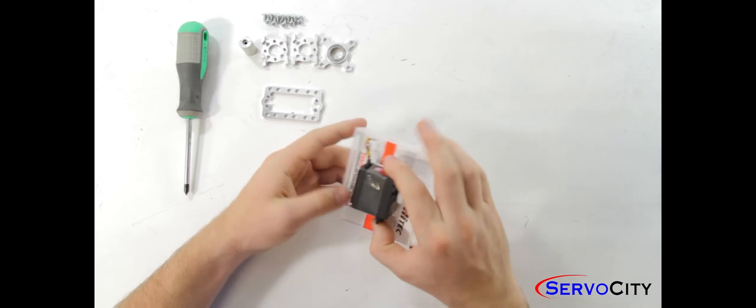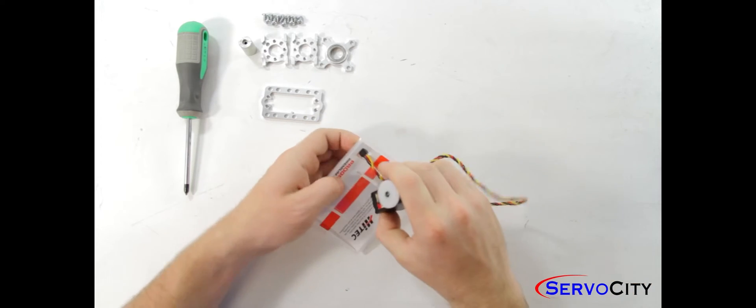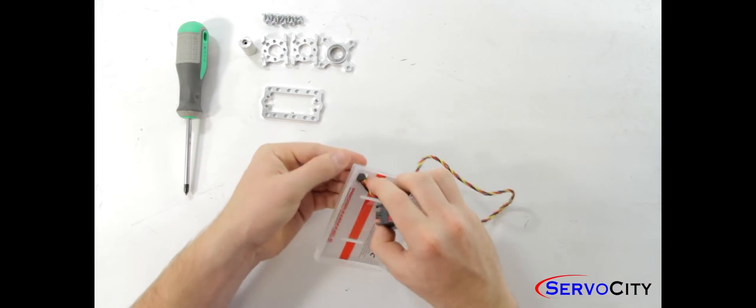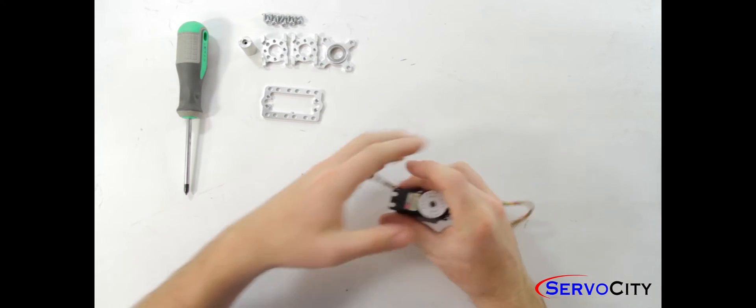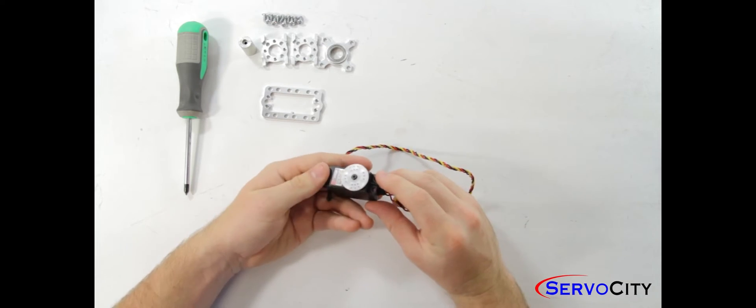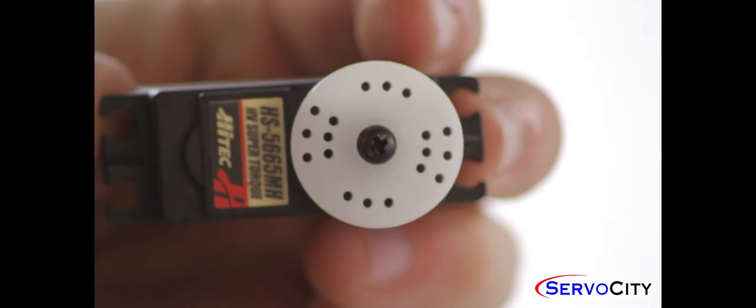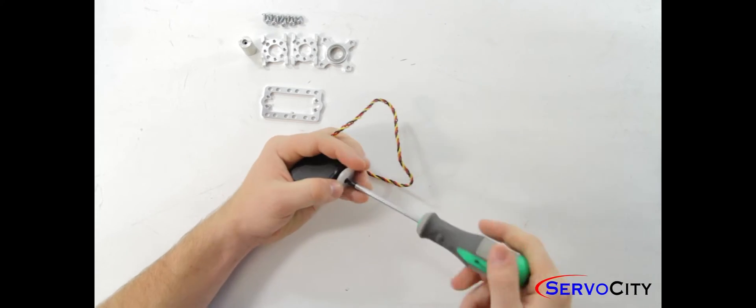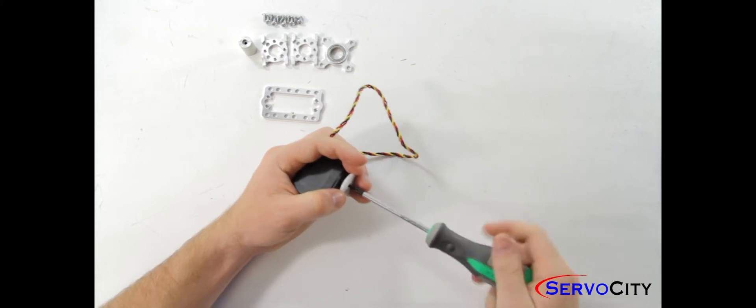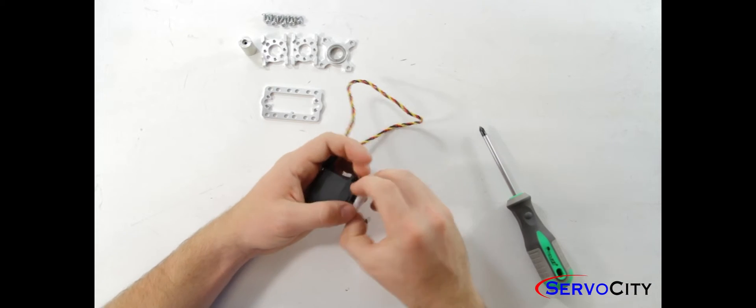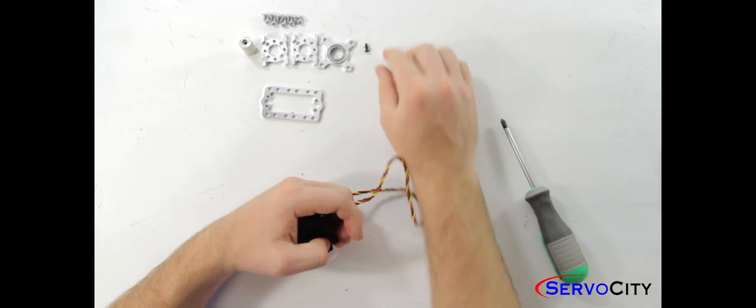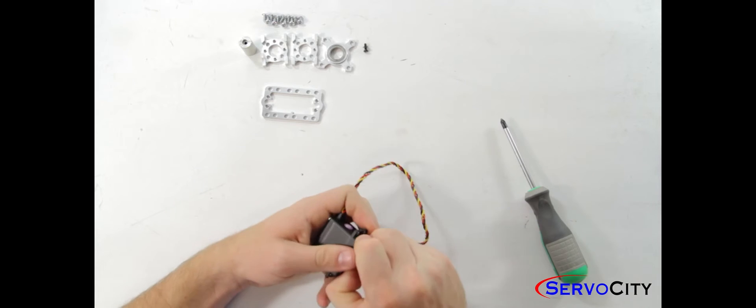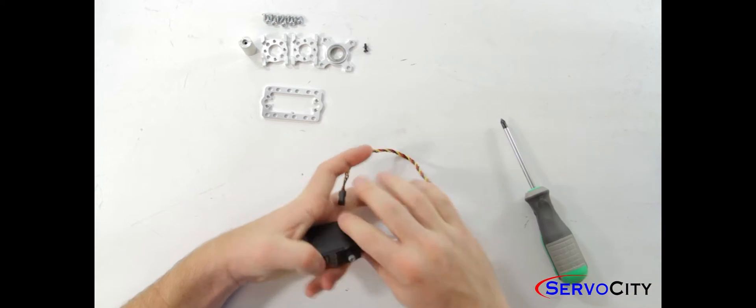First thing you notice from our servo when you get it out of the box is that it is equipped with a white circular servo horn. We are going to need to remove that before we can move on. It is attached with a Phillips head screw so we will grab our screwdriver and take that off. Once we get the screw removed you will need to put that in a safe place as we will be needing it in a minute. However, the servo horn you can do what you want with.